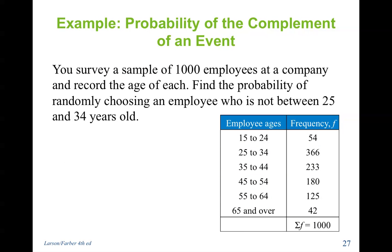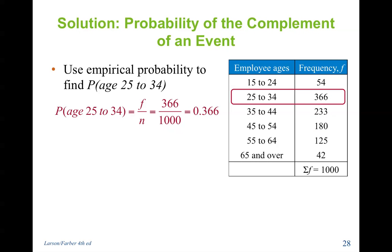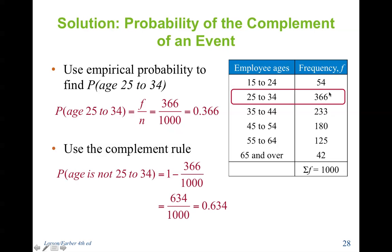You survey a sample of 1,000 employees at a company and record the age of each. Find the probability of randomly choosing an employee who is not between 25 and 34 years old. We're going to find who is not between 25 and 34 years old. It's much easier to find the probability of the people between 25 and 34 and subtract that from 1. If not, we'd have to find the probability of all the other age groups. So use the complement rule. The probability of ages 25 to 34 is 366 divided by the total, .366. Now the complement rule says subtract that from 1. So the probability of people not between 25 and 34 is .634.